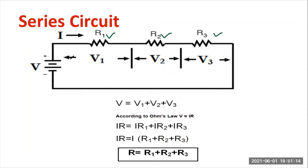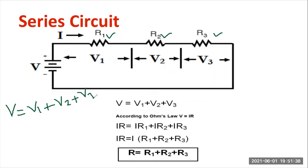I already told you that the voltage across an individual resistor varies with the value of resistance. R1, R2, R3 are not identical, so the voltage across R1, R2, and R3 will be different. Therefore, the total voltage is equal to V1 plus V2 plus V3. Just for your understanding, I am rewriting this again.